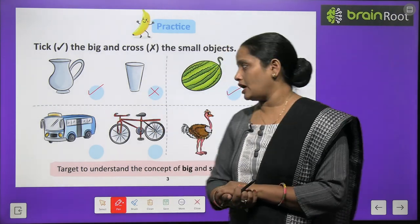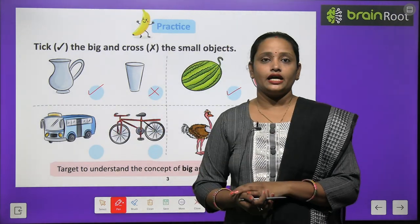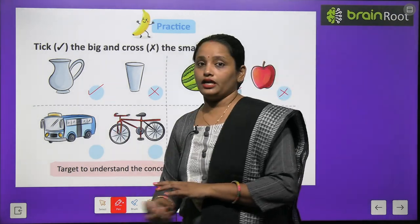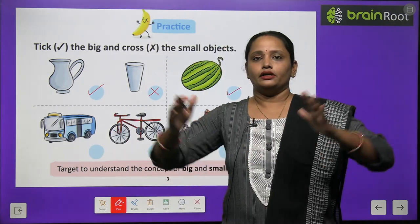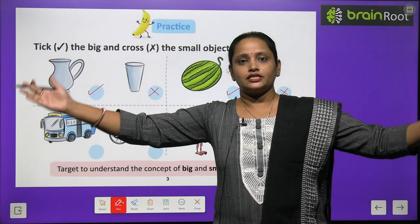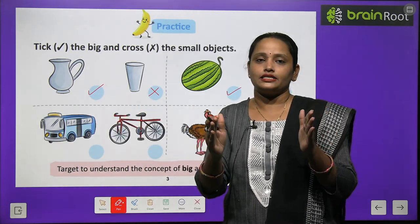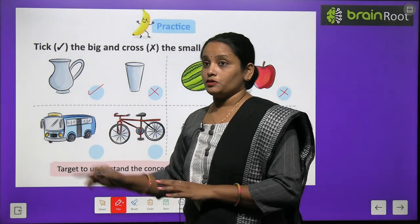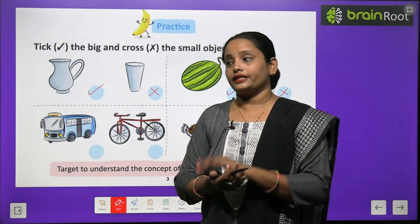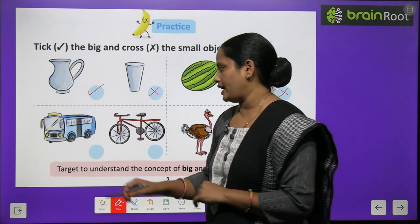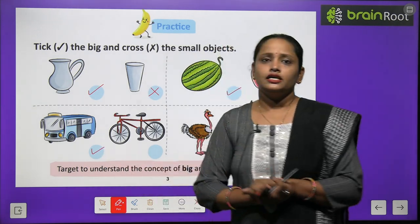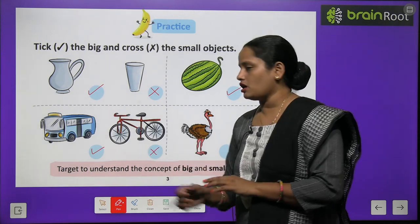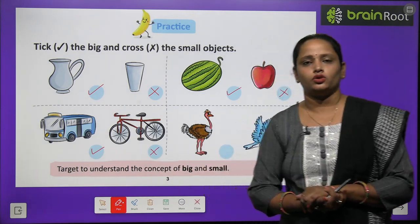Next picture mein ek bus hai aur ek bicycle hai. Toh bataiye, which one is big — bus ya phir bicycle? Bus mein bohot saare log baithte hain, means woh bada hai, so let's tick it. Cycle pe aap aur aapka friend hi baith sakta hai, toh ye hai small — small ko cross karenge.